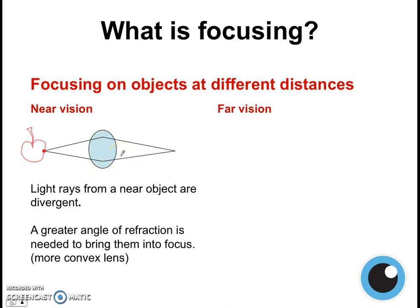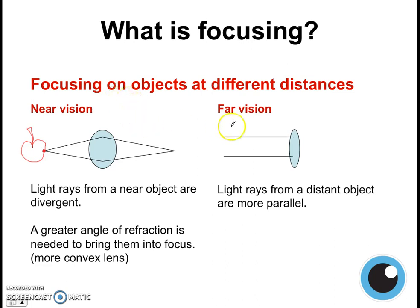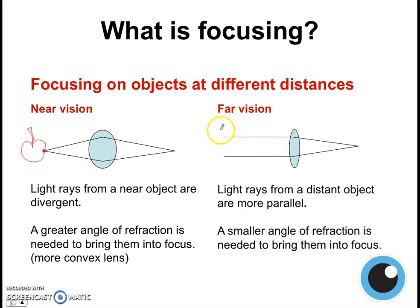However, if you're looking at something very far and distant from us, it presents a different challenge for the eye. If something is very far away, the light rays from distant objects tend to be more parallel — they don't tend to be divergent; they come into the eye quite parallel. In order to focus these light rays onto the retina, we only need a smaller angle of refraction, so you don't need to bend the light so much. Therefore, the lens doesn't need to be so thick — it's a less thick and less convex, less curved lens to see things which are far away.